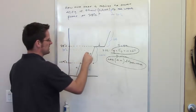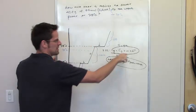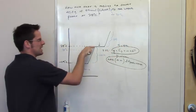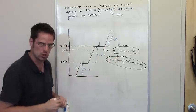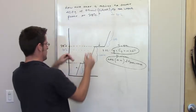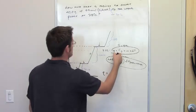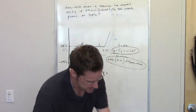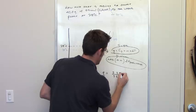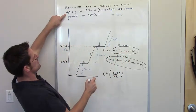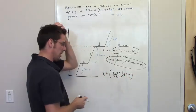For this problem, going from 35°C to 78°C, Q equals the specific heat — given as 2.3 joules per gram kelvin, specific to ethanol at this pressure — multiplied by the mass of 42 grams, multiplied by delta T of 78 minus 35.